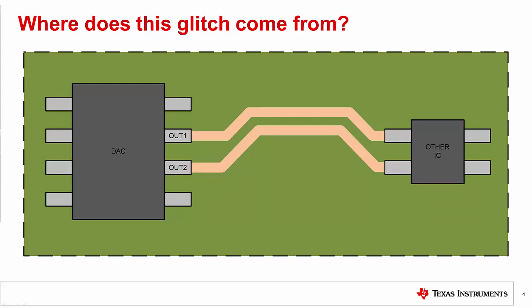But where does this glitch come from? Well, there are a few sources: physical routing of the device outputs, power supply loading, and reference loading. First, we will talk about the device layout as being a cause.